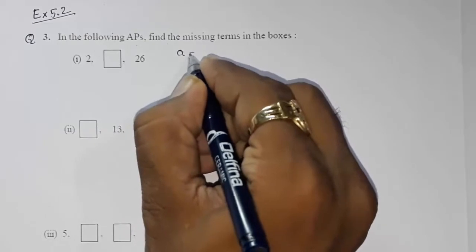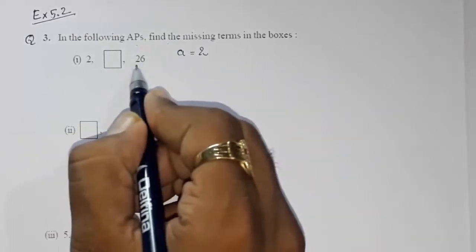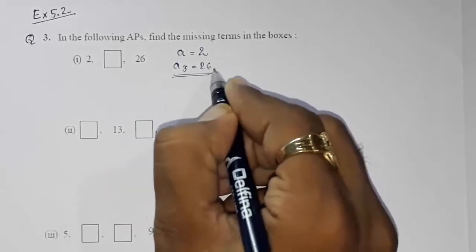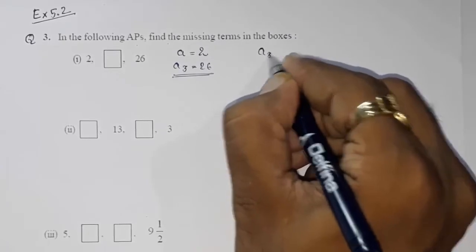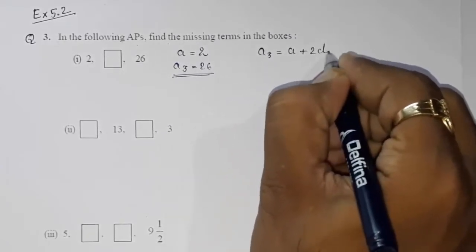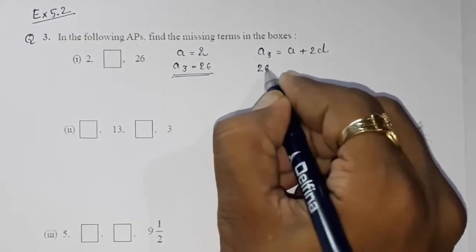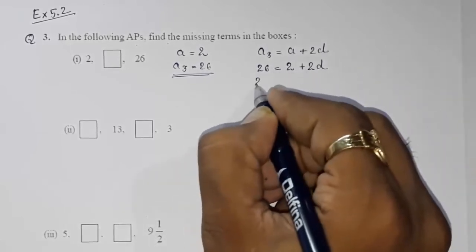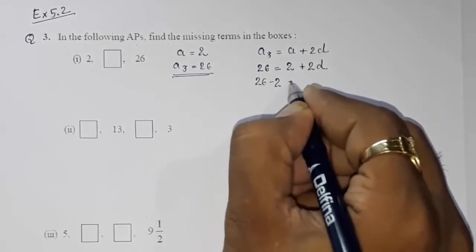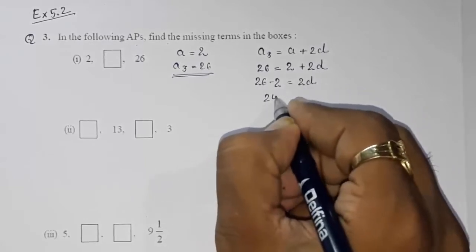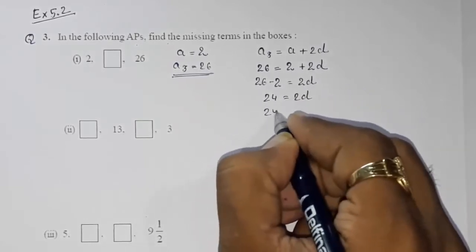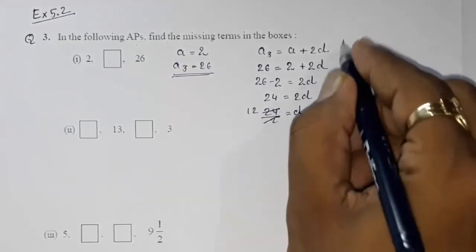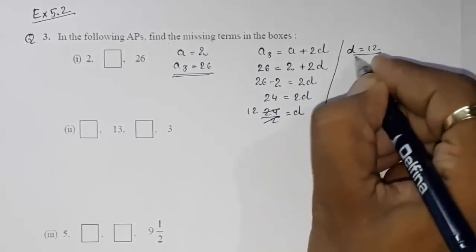The first term is given, so directly write a = 2. The third term is given, so a3 = 26. We use the formula: a3 = a + 2d. Substituting: 26 = 2 + 2d, so 26 minus 2 = 2d, giving 24 = 2d, therefore d = 24/2 = 12. The common difference is 12.